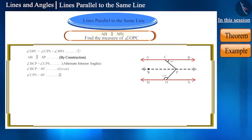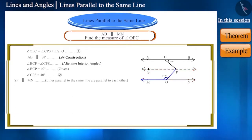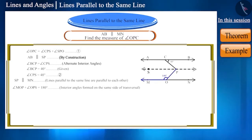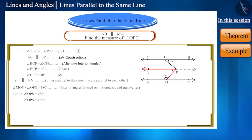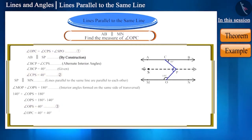So lines SP and MN will also be parallel, because lines parallel to the same line are parallel to each other. Angle MOP and angle OPS are interior angles formed on the same side of the transversal, so their sum will be 180 degrees. We are given the measure of angle MOP as 140 degrees. Placing its value, we calculate angle OPS as 40 degrees.